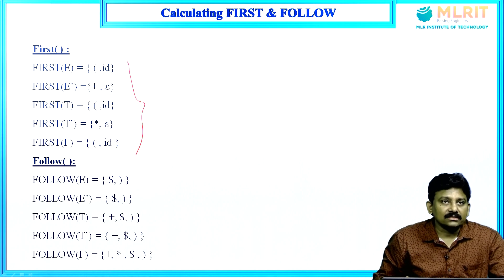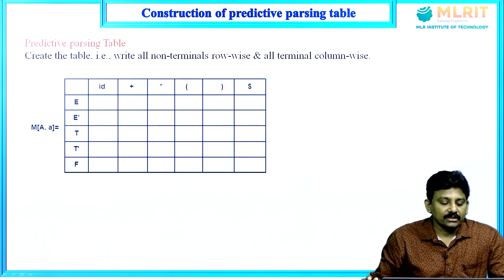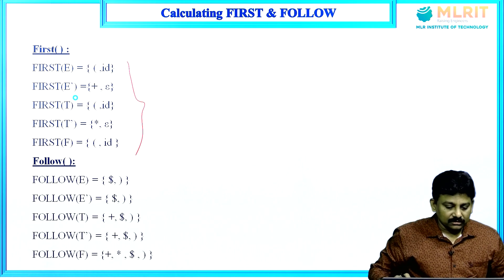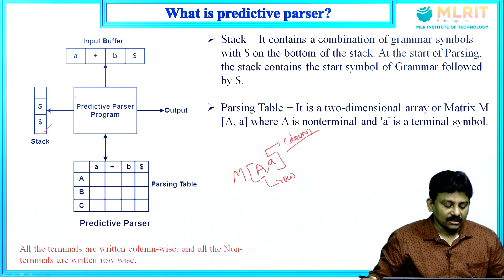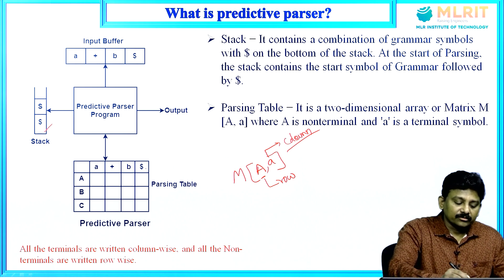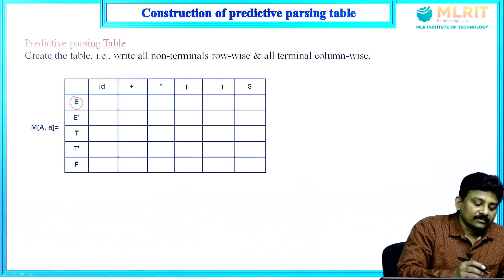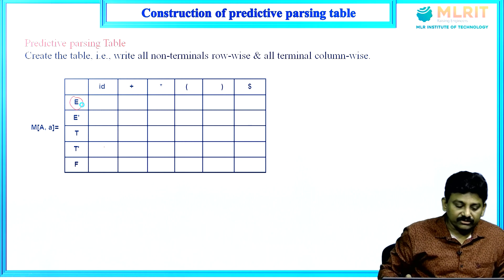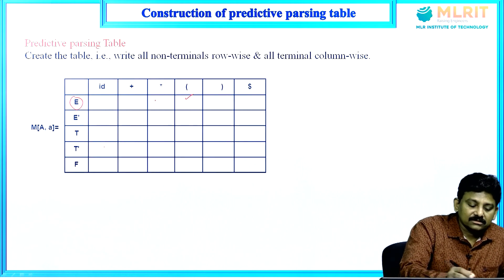Now, constructing the predictive parsing table. The table rows represent non-terminals and columns represent terminal symbols plus the dollar symbol. To fill row E: First(E) = {(, id}, so under columns '(' and 'id', we enter E → TE'. For row E': First(E') = {+, ε}. For '+', we enter E' → +TE'. Because of ε, we find Follow(E') = {$, )}, so under '$' and ')', we enter E' → ε.